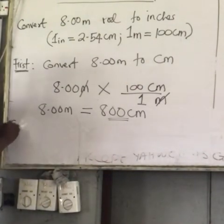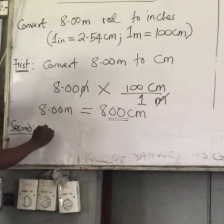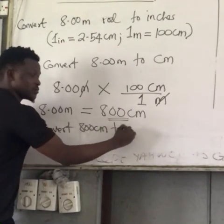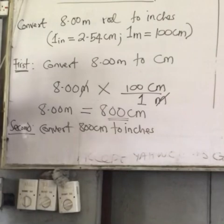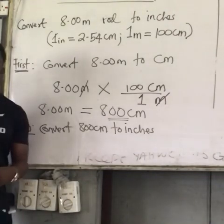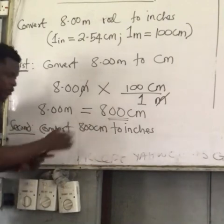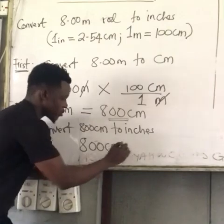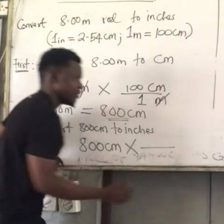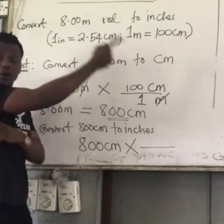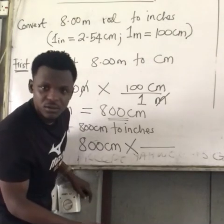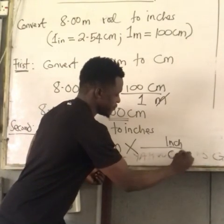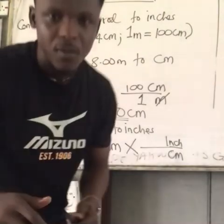Second step: convert 800 centimeters to inches. Put down 800 cm, then a multiplication sign and a fraction line. I'm going from cm to inches, so inches go on top and cm on the bottom so they cancel. Using the relationship 1 inch = 2.54 cm, this becomes: 800 cm × (1 inch / 2.54 cm).